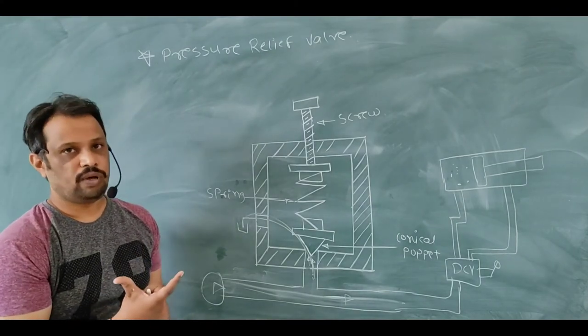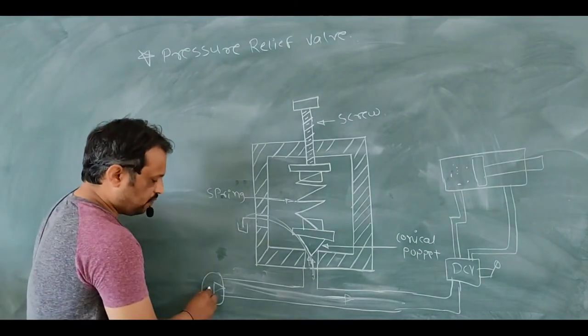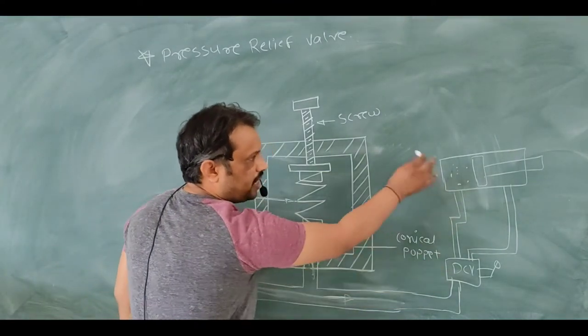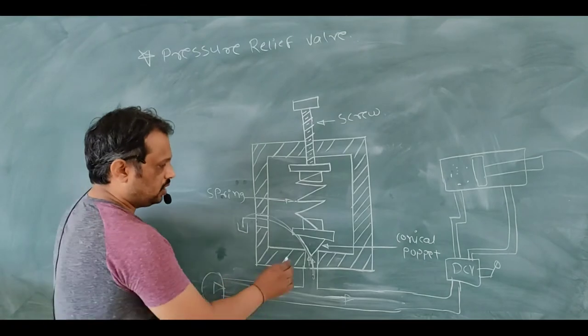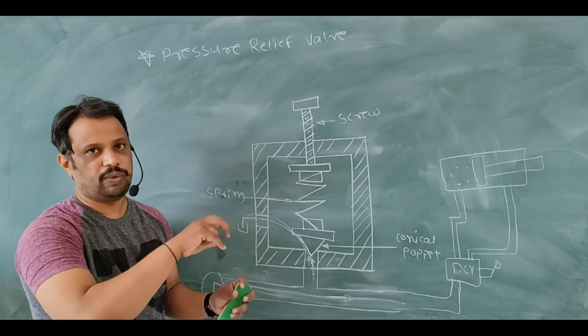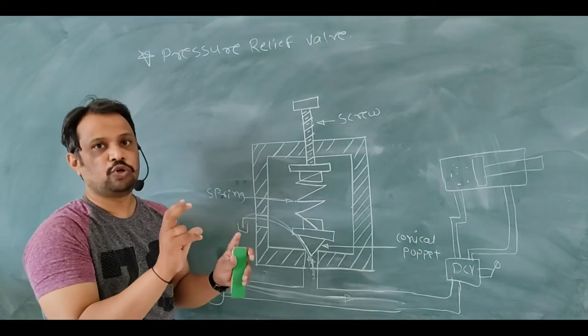Now we are going to see working of PRV. Oil coming from your pump and goes to your system means DC valve and your actuator. This conical poppet is set preset, preset with your handle at some suitable pressure.